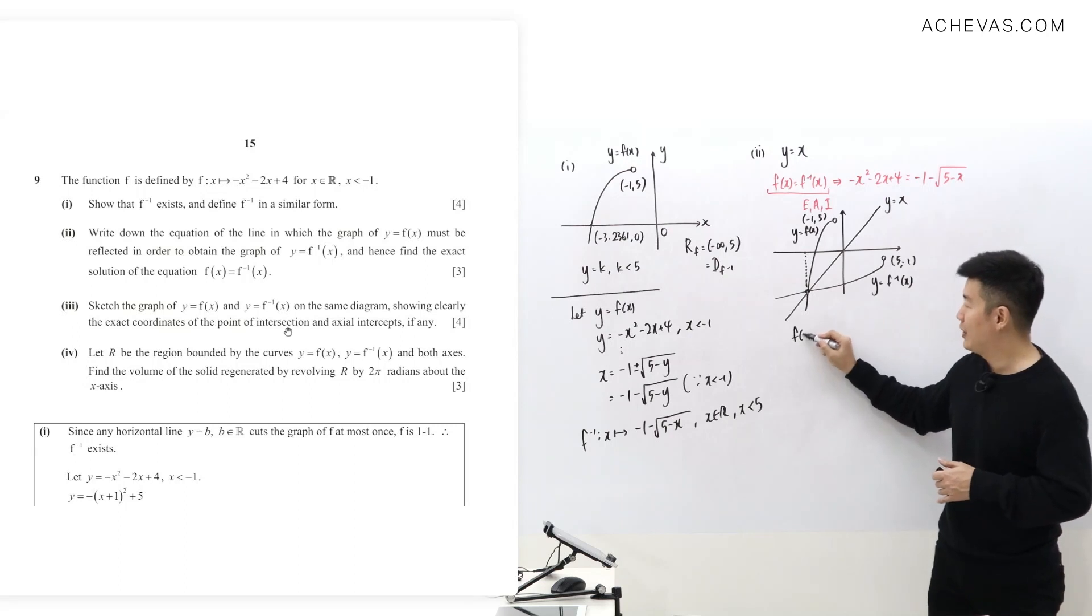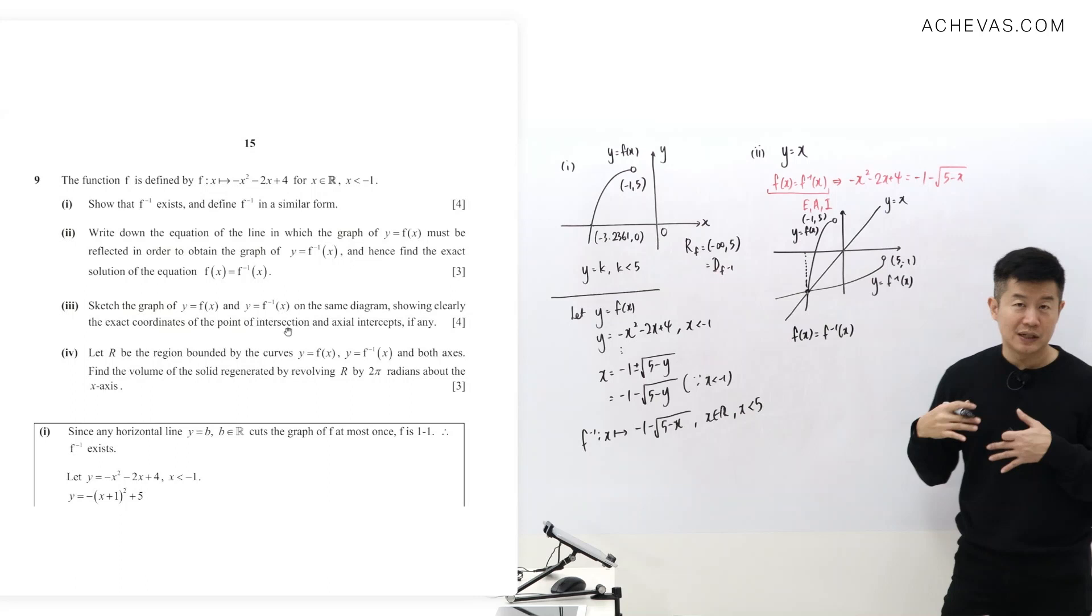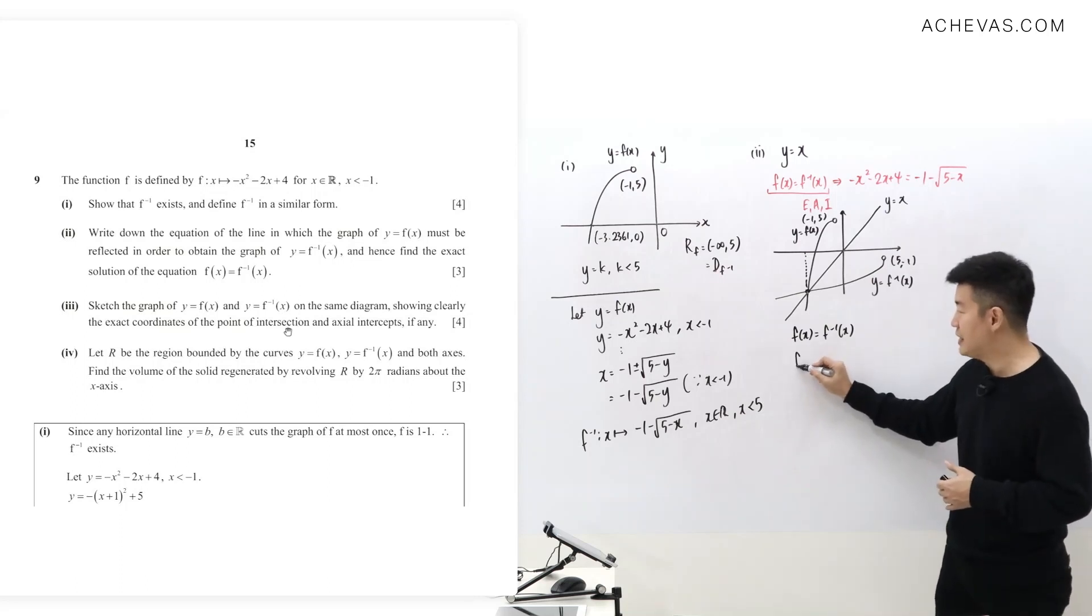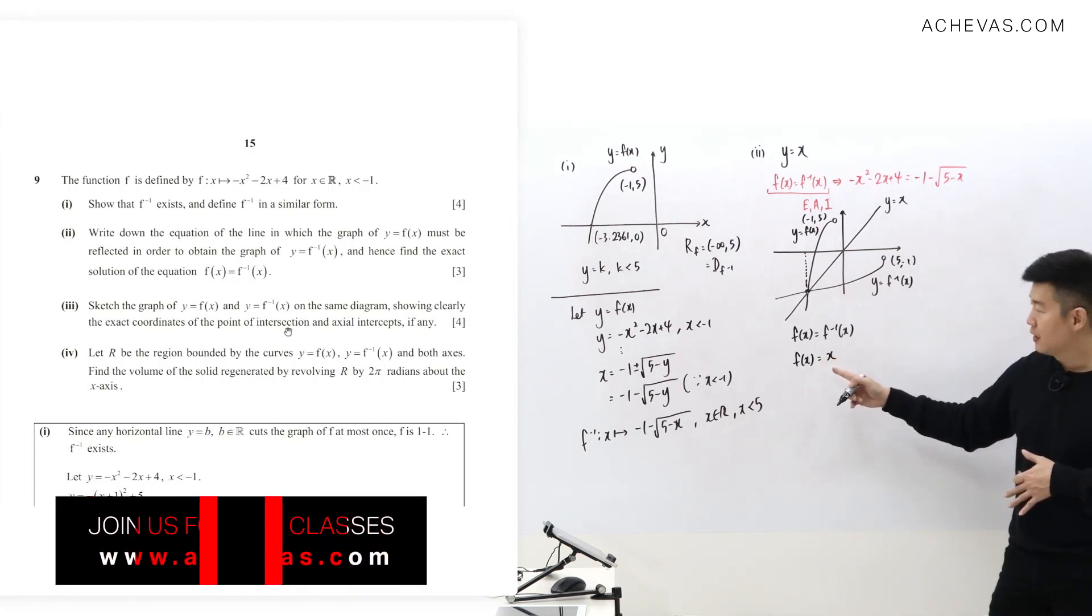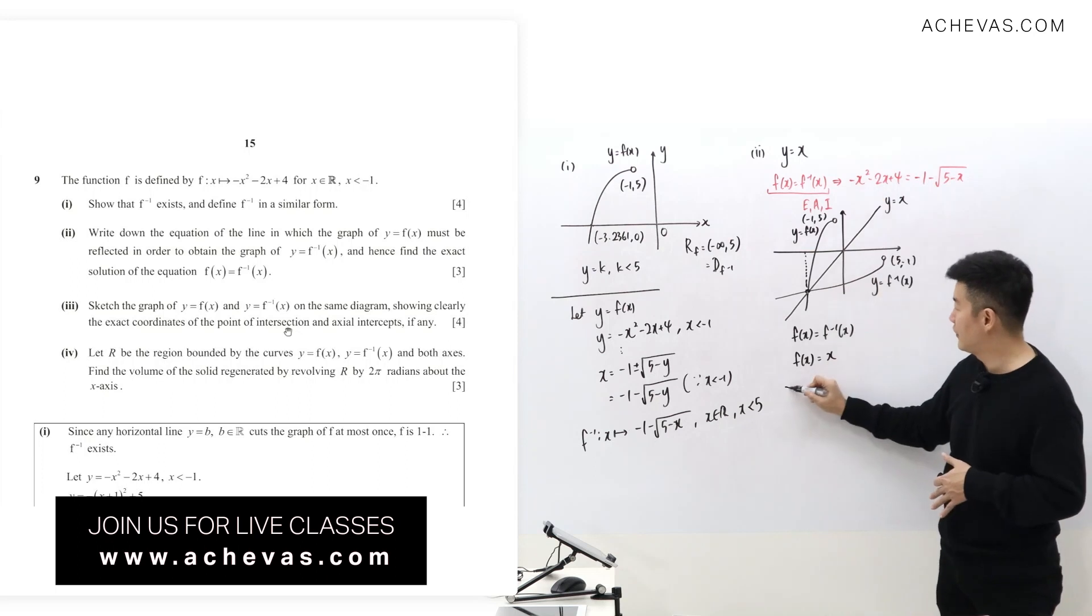So from f(x) equals f inverse (x), through our analysis, we decide that an easier way for me to find the same answer is to go for this: let f(x) be equal to x, which is to have negative x squared minus 2x plus 4 equal to x. Way simpler.